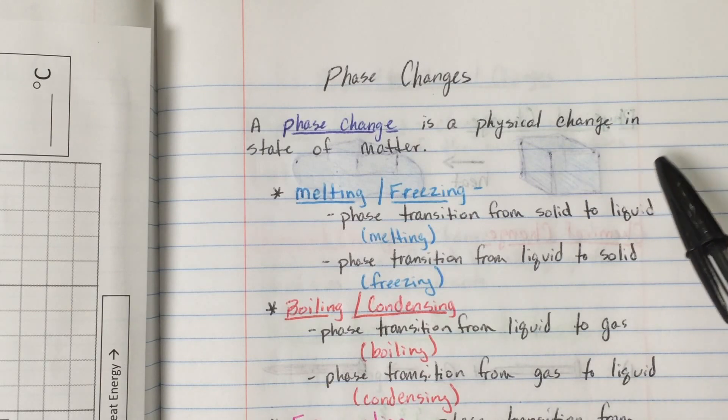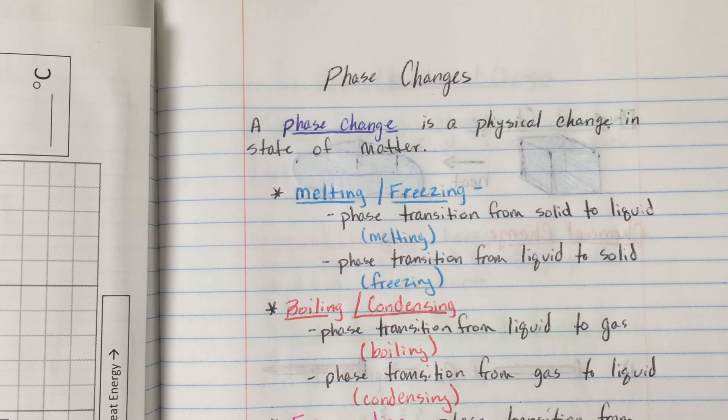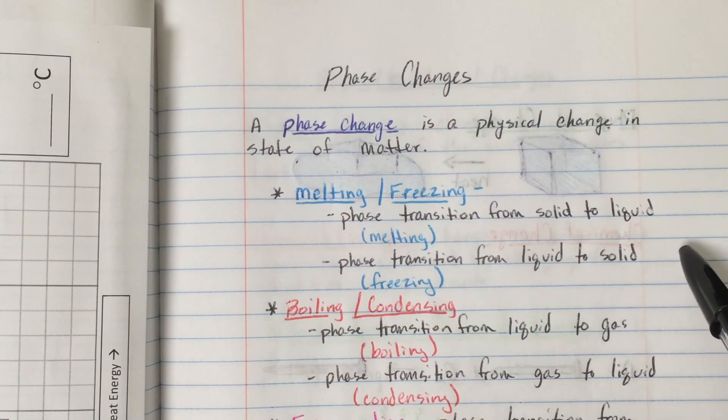A phase change is a physical change in state of matter. We talked about a few different examples of phase changes in class. The first ones were melting and freezing, and I've grouped these together because they both involve a transition between the solid and liquid states. Melting is a phase transition from solid to liquid, and freezing is a phase transition from liquid to solid.